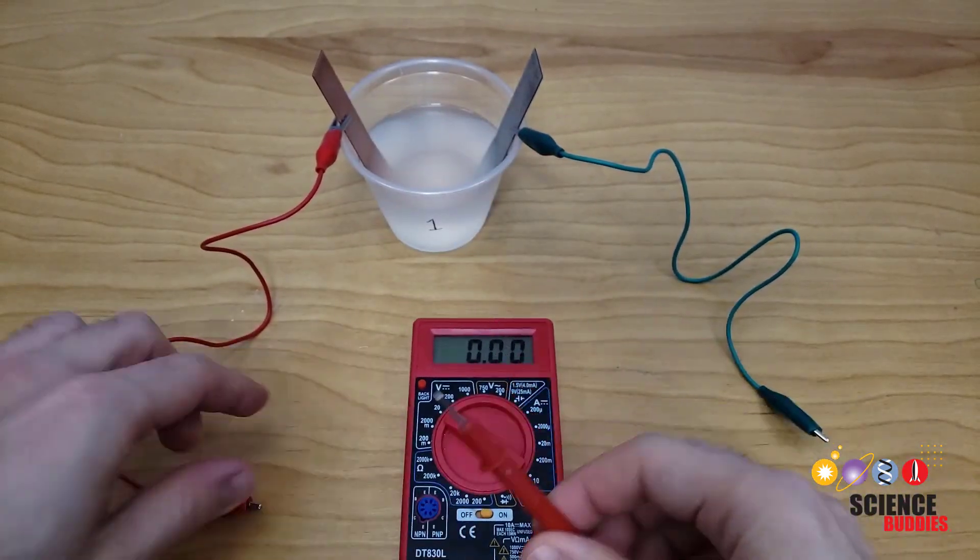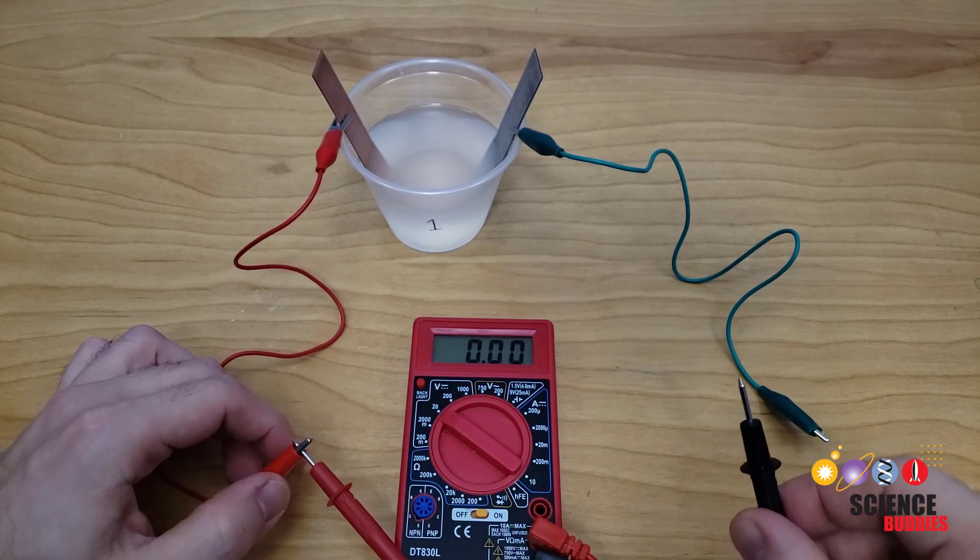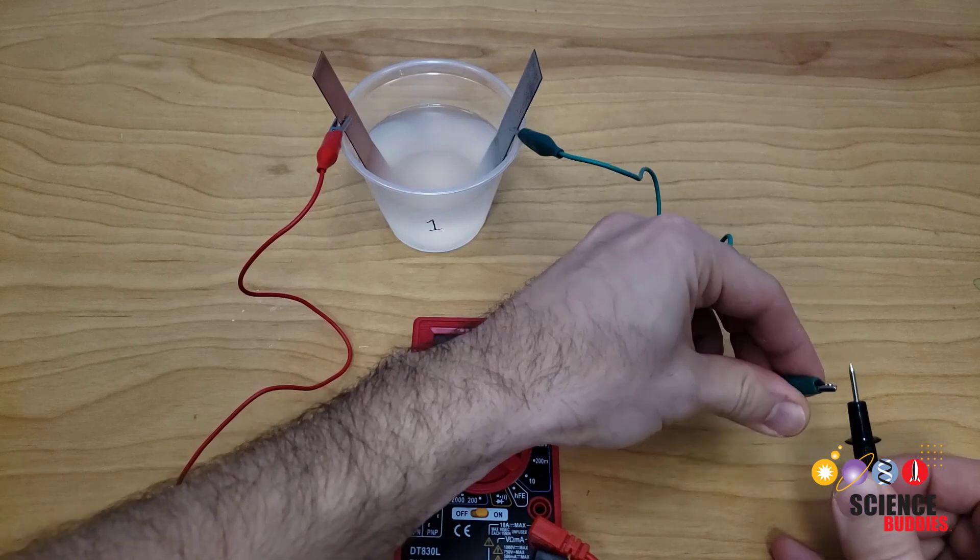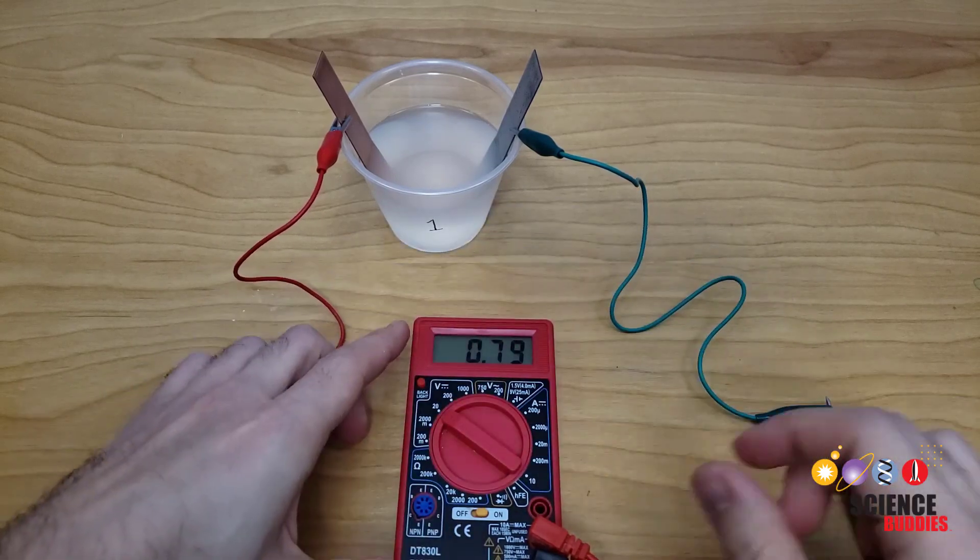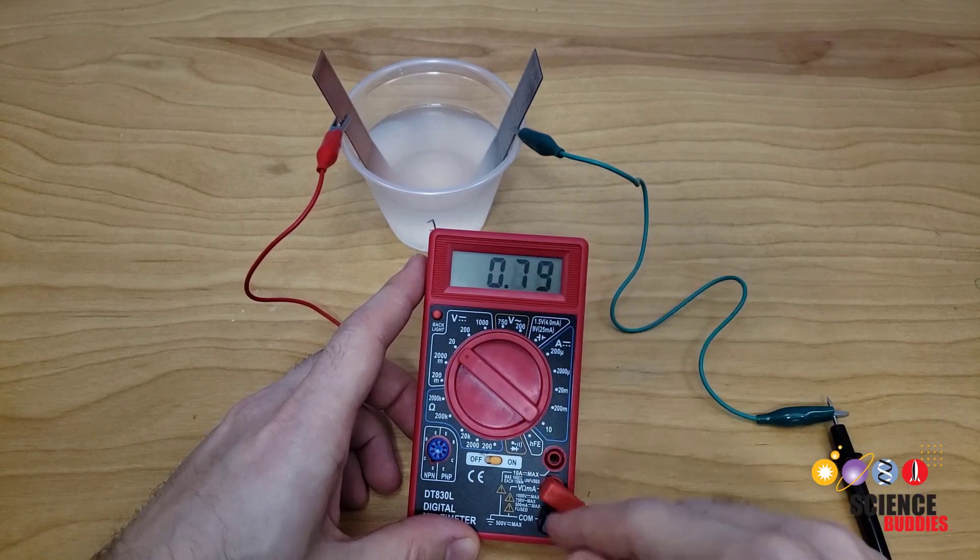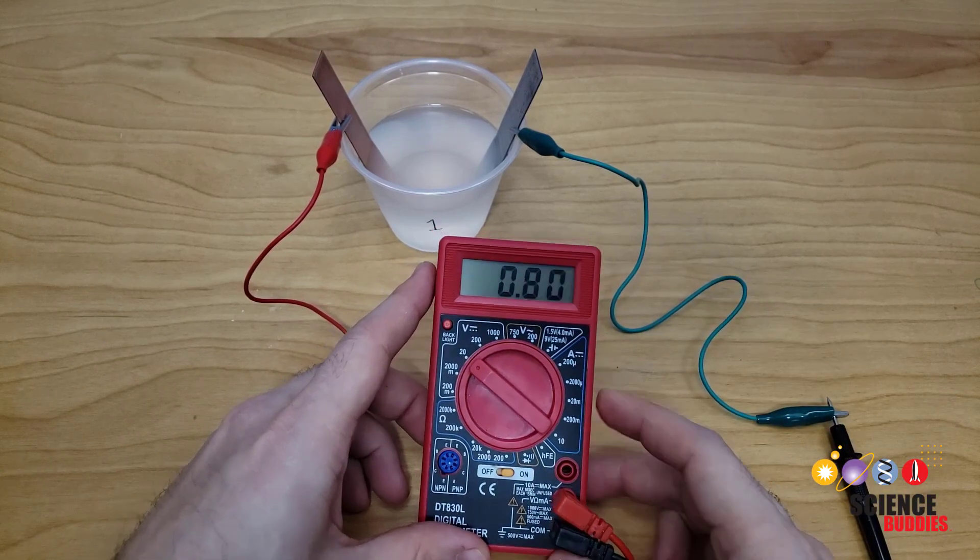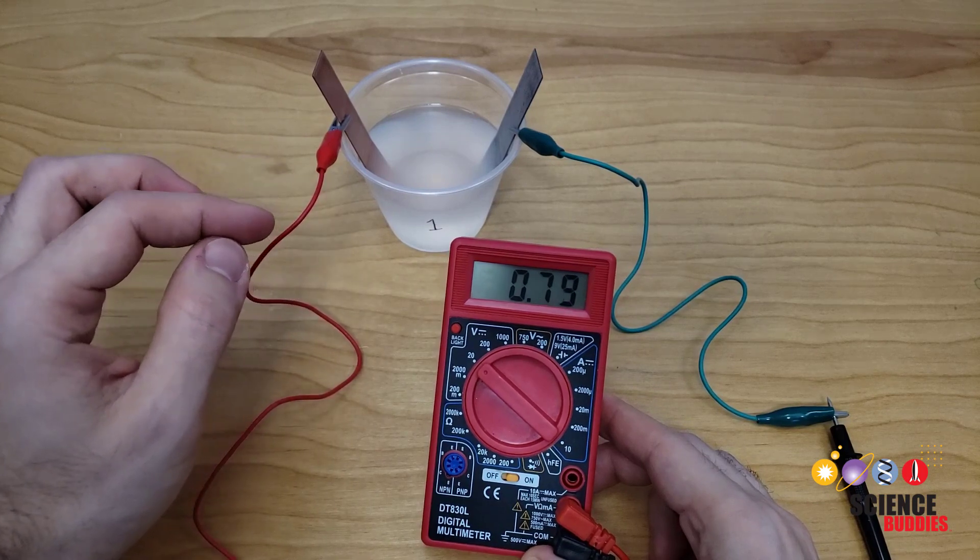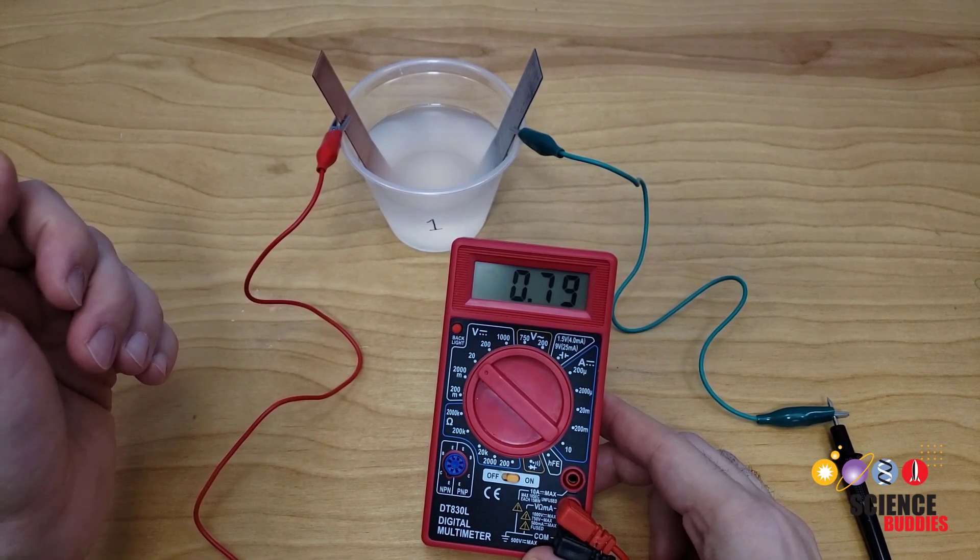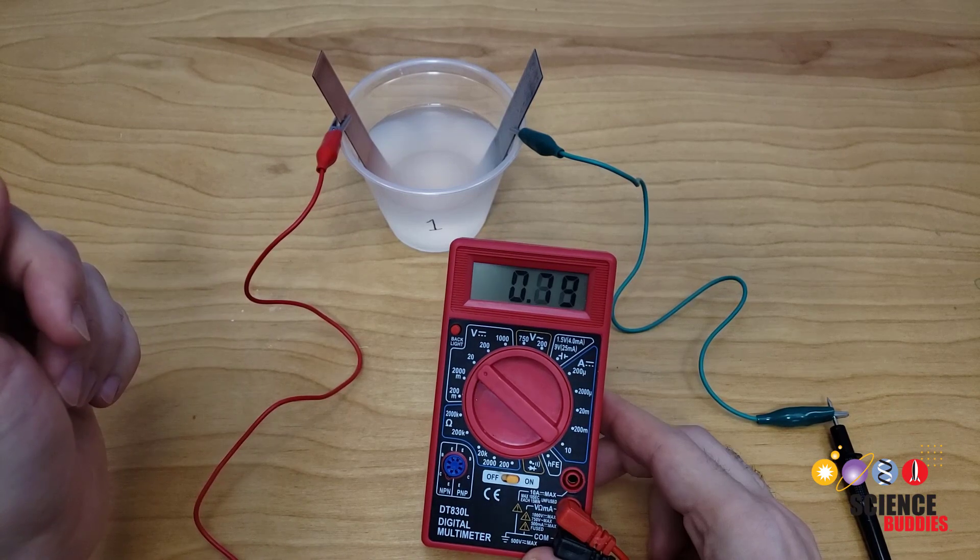Take the red probe and connect it to the red alligator clip. Take the black probe and connect it to the green alligator clip. This measures your battery's open circuit voltage. The multimeter does not allow any current to flow through it when it's set to measure voltage. So this measures the highest voltage that your battery can produce when it has no load because it is not sending out any current. Record this reading in your data table.